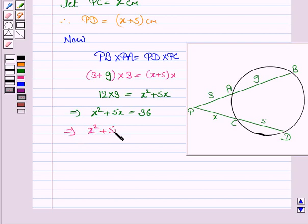This implies x squared plus 5x minus 36 is equal to 0. Now, we will factorize this quadratic equation.